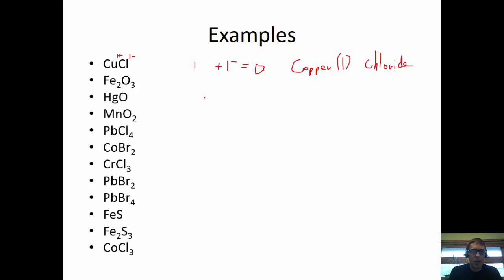Let's do MnO₂. Oxygen is group 16, so it has a 2− charge. We have two oxygens: 2 × (2−) = 4−. To balance to zero, we need 4+, and we only have one manganese, so it must be Mn⁴⁺ — manganese(IV) oxide. The Roman numeral for four is IV.